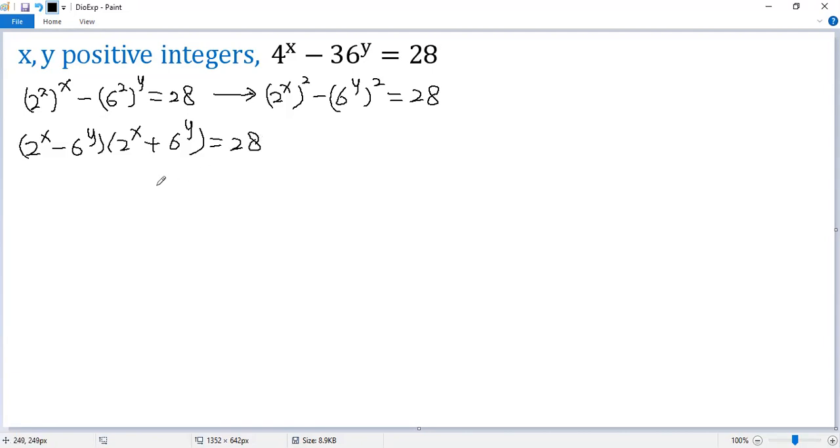Now let's analyze the left side. We know 2 to the power of x and 6 to the power of y are even numbers, right? So the difference should also be an even number. The sum is also an even number.